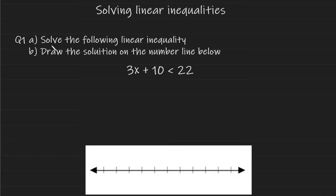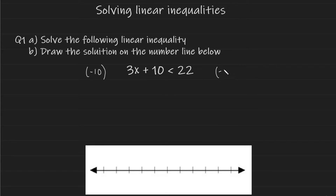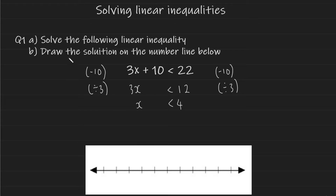In this example we're being asked to: a) solve the following linear inequality, and b) draw the solution on the number line. Solving an inequality is pretty much the same thing as solving an equation — we want to isolate x and eliminate everything next to it. We first eliminate the plus 10 by subtracting 10 from both sides, leaving us with 3x < 12. Dividing both sides by 3 gives us x < 4.